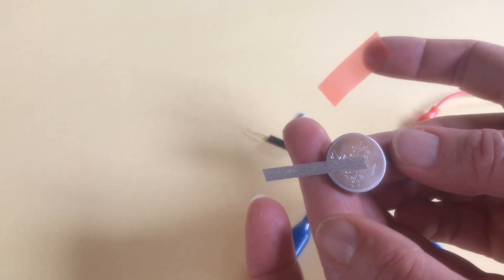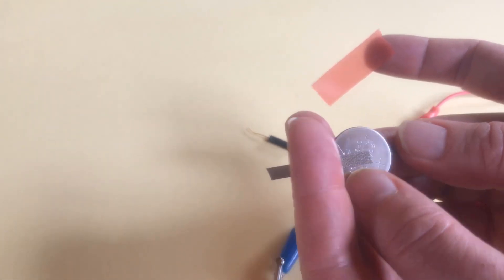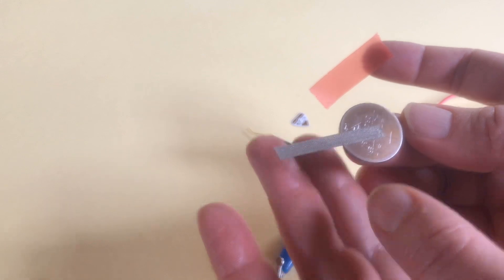I put a piece of conductive tape on the top side, the top positive side of the battery, and then I put another piece on the negative, bumpy, bottom side.